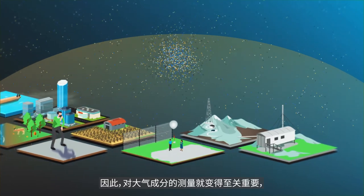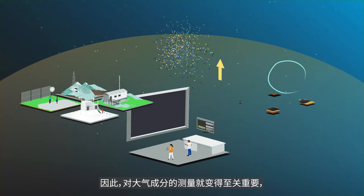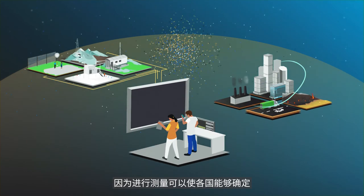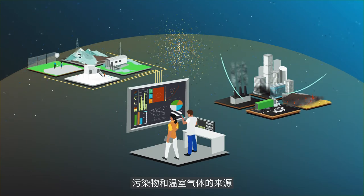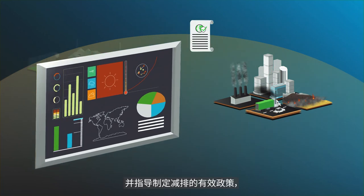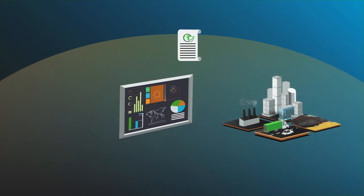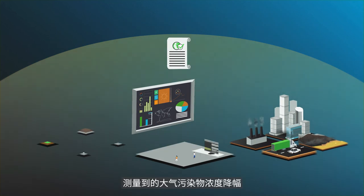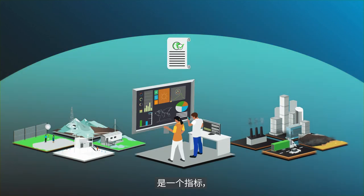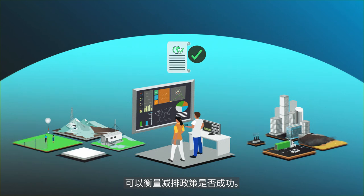Thus, measurements of atmospheric composition have become crucial as they enable countries to identify sources of pollutants and greenhouse gases and to guide effective policies to reduce emissions and help minimise risks to the environment. A measured drop in atmospheric pollutant concentrations is an indicator of a successful policy to reduce emissions.